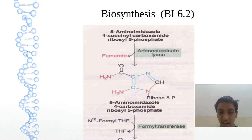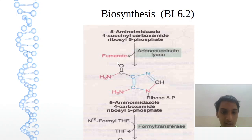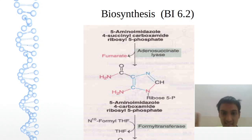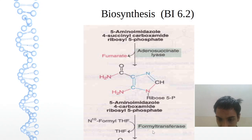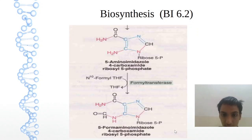There is release of fumarate, which enters the TCA cycle, compared with the urea cycle — in the urea cycle it was argininosuccinic acid or argininosuccinase, giving arginine and fumarate; it is a similar reaction. Then on adenosuccinase, there is release of fumarate. So the succinyl will be removed; instead, the 4 will be attached to this carboxamide.